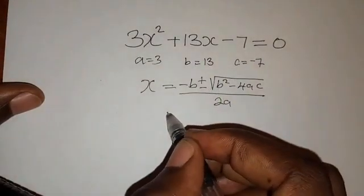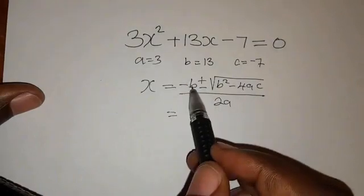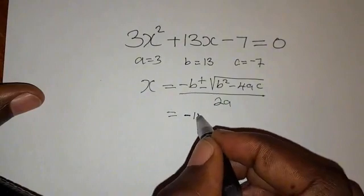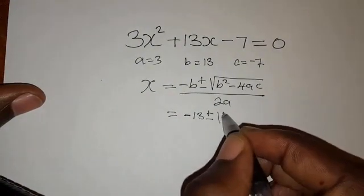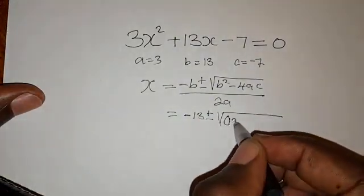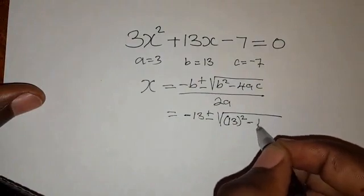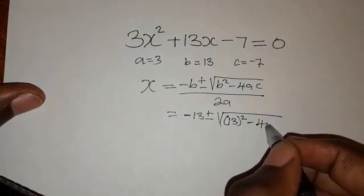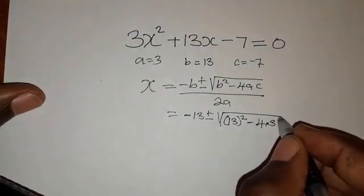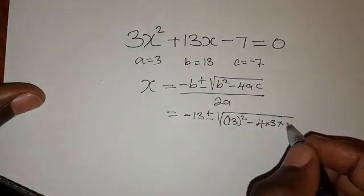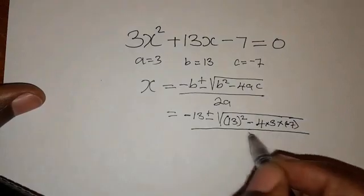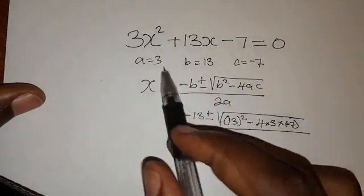So we just substitute the values. We are going to have negative 13 plus or minus the square root of 13 squared minus 4 times a, which is 3, times c, which is negative 7. Then everything divided by 2 times 3.